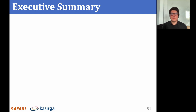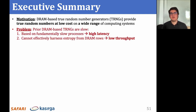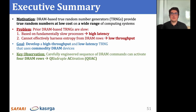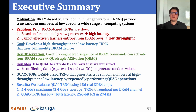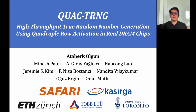I would like to wrap up with a summary of our work. DRAM-based TRNGs can provide high throughput and low cost true random number generation to a wide range of systems. The problem with prior DRAM-based TRNGs is that they are slow. Our goal was to develop a high throughput and low latency TRNG that uses commodity DRAM devices. We observed that a sequence of DRAM commands can activate 4 DRAM rows in quick succession, which we refer to as quadruple activation. Our key idea is to use quadruple activation to generate random values on DRAM sense amplifiers. We evaluate QuadTRNG using real DDR4 chips and find that it achieves up to 5.4 Gbps throughput per DRAM channel with low latency, outperforms prior DRAM-based TRNGs, and passes standard NIST randomness tests, making it a high-quality true random number generator. Thank you for listening, and please read our full paper if you are interested in QuadTRNG.